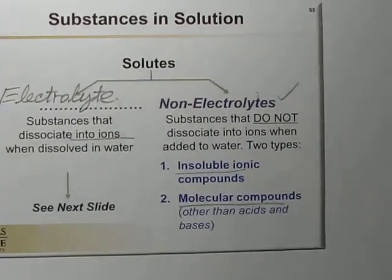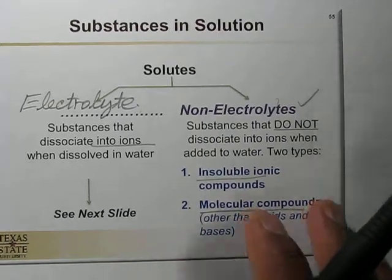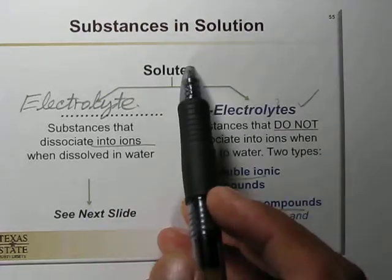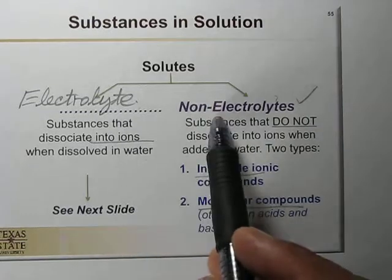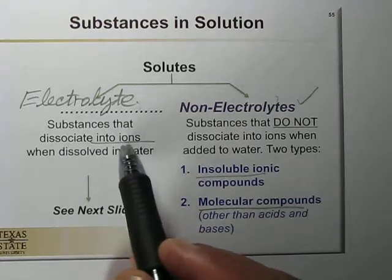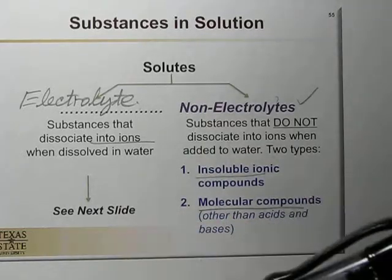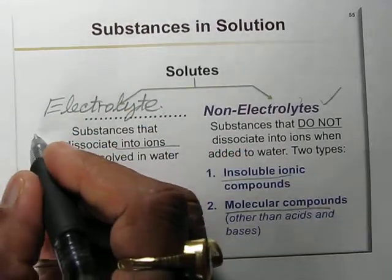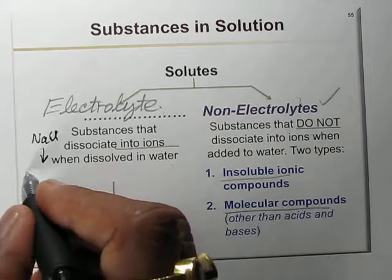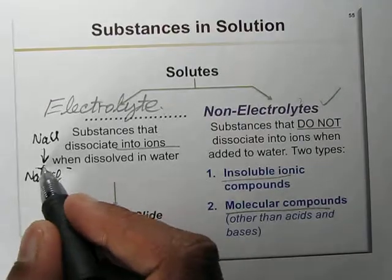There are two types of solutes: electrolytes and non-electrolytes. An electrolyte is a substance that dissociates into ions when dissolved in water. For example, sodium chloride dissolved in water dissociates into sodium ion and chloride ion, so sodium chloride is called an electrolyte.